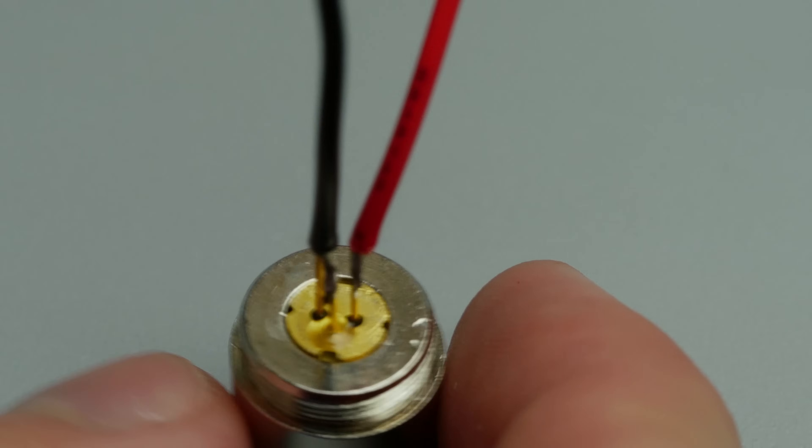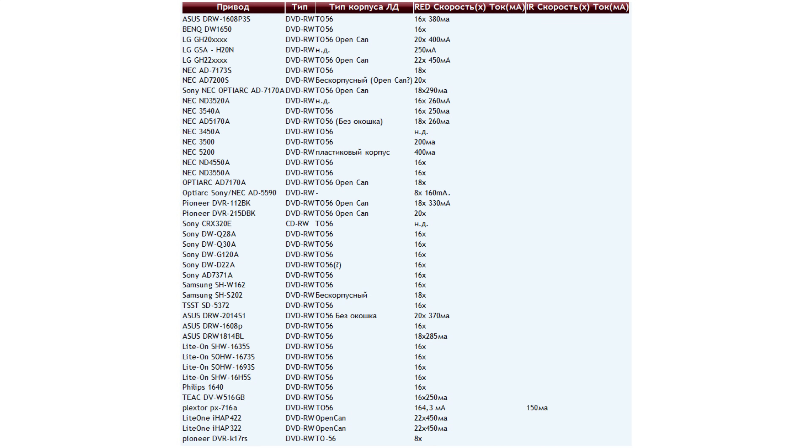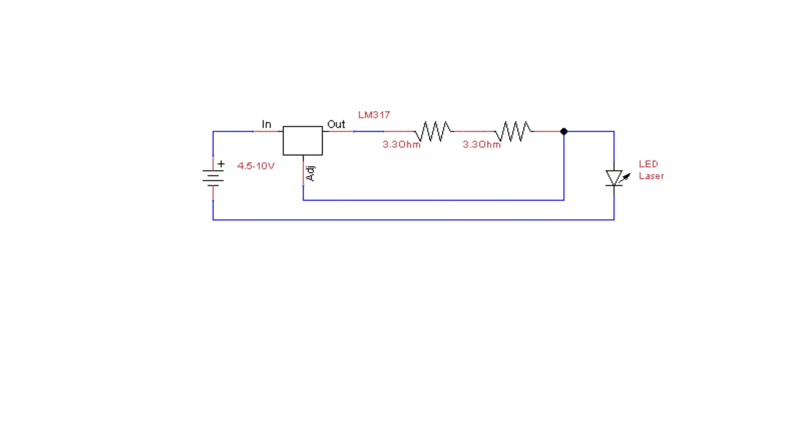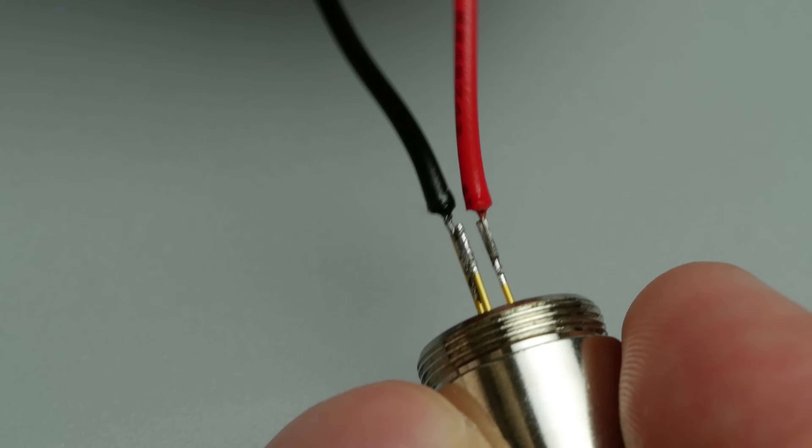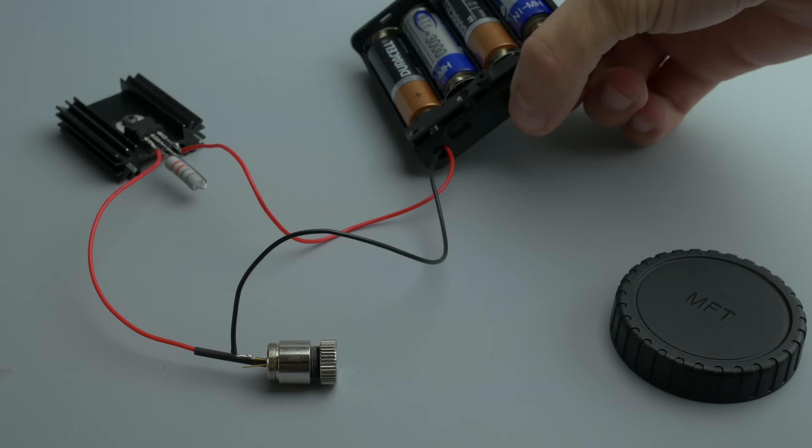One important moment. Because I used a new diode, I was 100% sure that it will handle this current. If you are not sure, use the series connection of two 3.3 ohm resistors. It will give you a safe current for almost all diodes from DVD. I used a heat shrink sleeve to protect from short. That's it. Let's turn on the power.